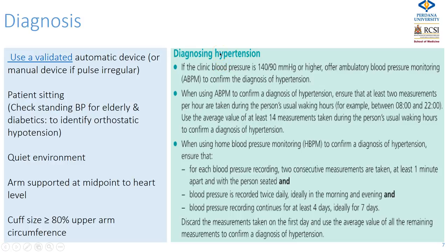According to the NICE criteria, if the clinic blood pressure is more than 140 over 90 you should offer ambulatory blood pressure monitoring. Many GPs in Ireland have ambulatory monitoring, and there is a service provided by the Blood Pressure Unit at St Vincent's Hospital for interpreting ambulatory blood pressure recordings.